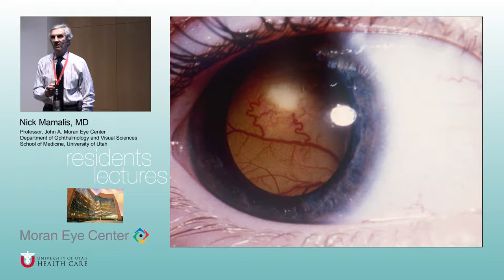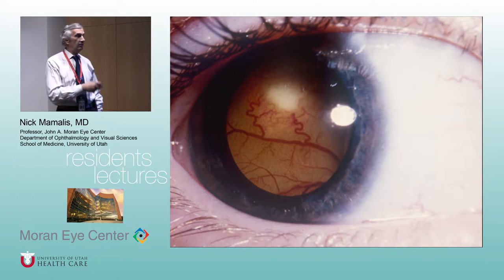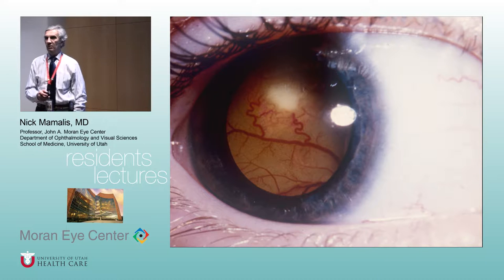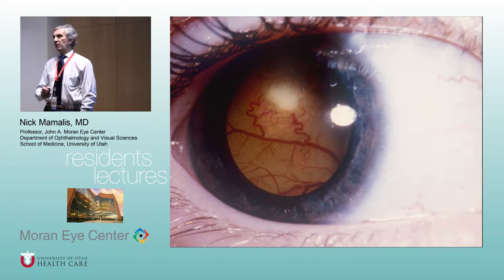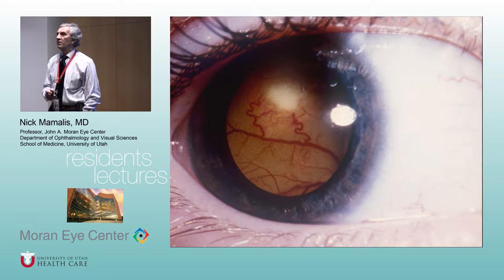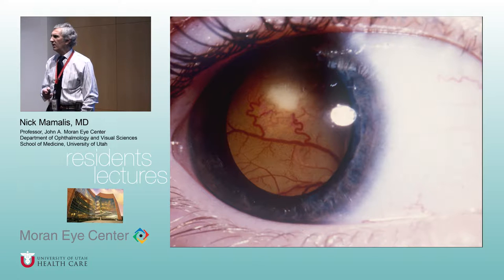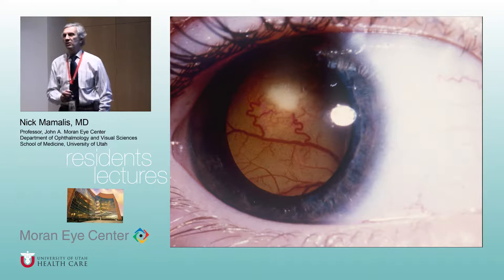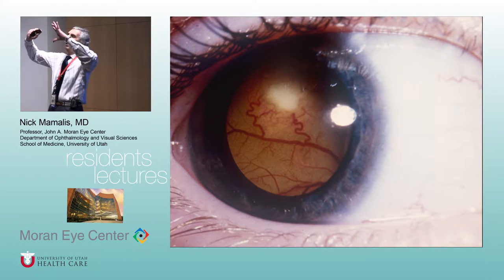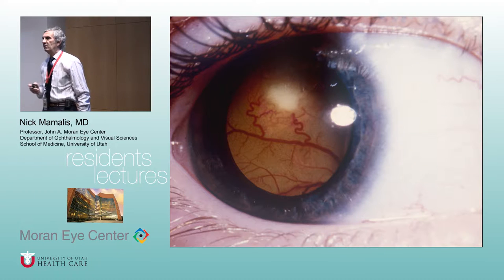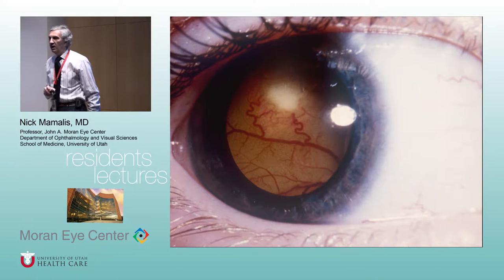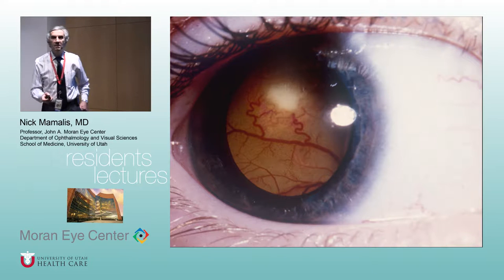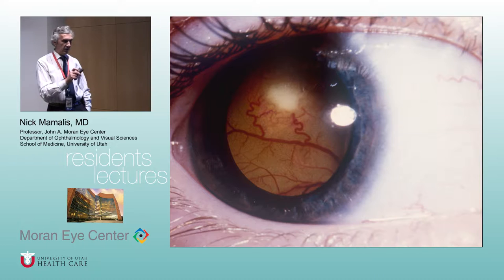A regular retinal detachment can also cause leukocoria and look white. Toxocariasis is another cause — you can get those cat and dog parasites mixed up. A severe toxoplasma case with a whited-out macular scar is uncommon. Uveitis, chronic uveitis, can do it too.